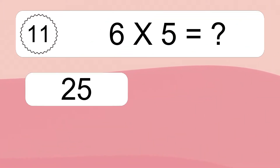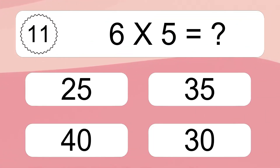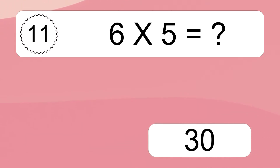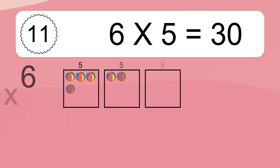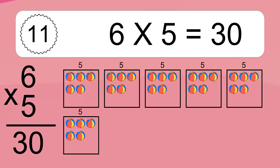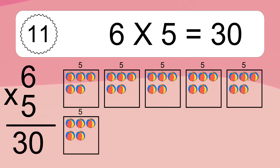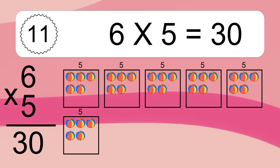Six times five equals what? Six times five equals thirty. We have six boxes, and each box has five colorful balls inside. If you count all the balls in all the boxes together, you will have six times five balls. This equals thirty balls.